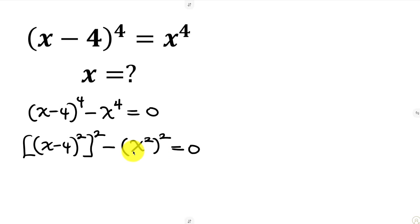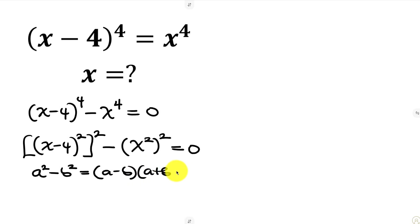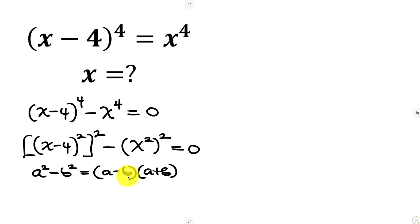Now we have something that looks like the famous identity — the difference of two squares. The identity of difference of two squares can be written as: a squared minus b squared is the same as (a minus b)(a plus b). Comparing this to our expression, our 'a' is what we have inside the big bracket and our 'b' is x squared.